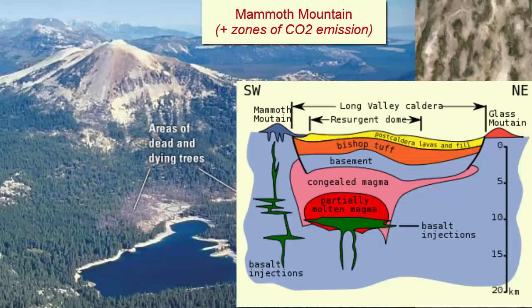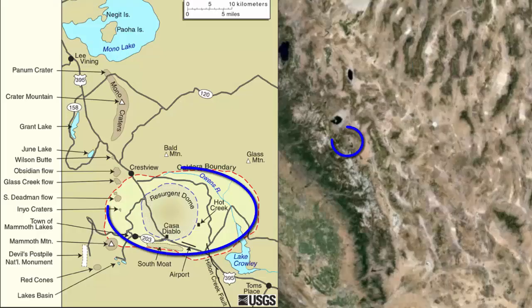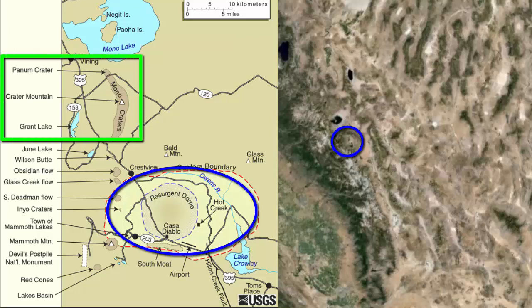There is still an active magma chamber under the caldera which releases carbon dioxide gases and hot water at numerous locations around the rim. It has been classified as one of the largest volcanic centers in North America. The most recent eruptions were those that produced Panum Crater and the Inyo Craters, 500 to 600 years ago.